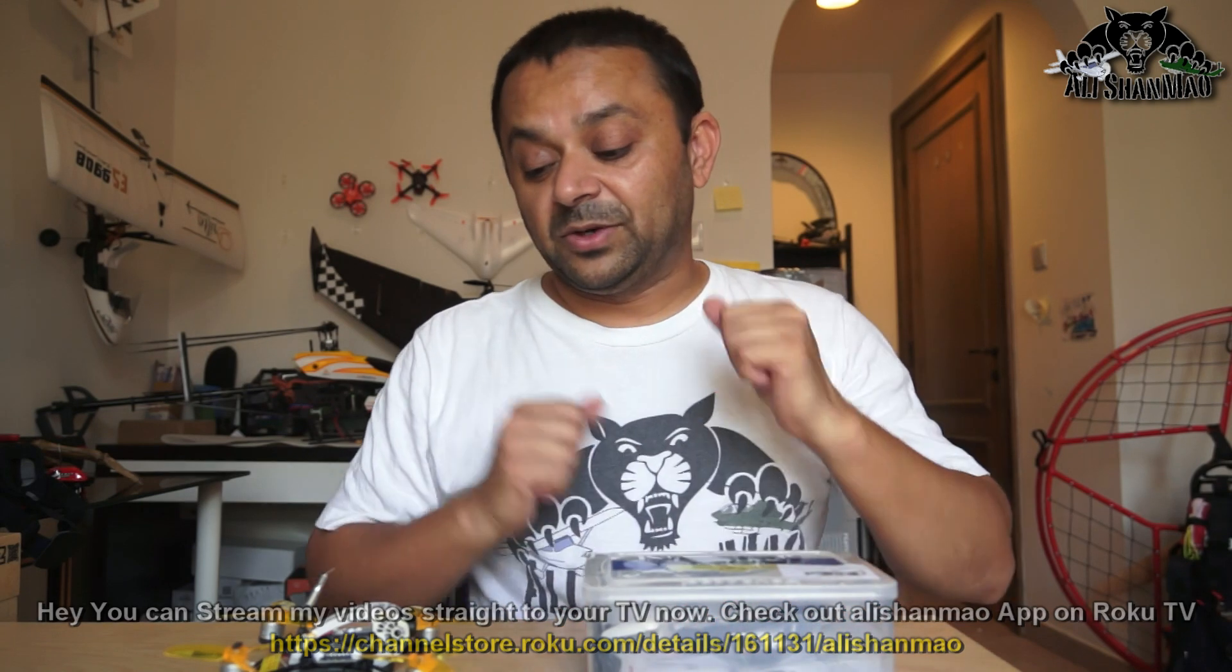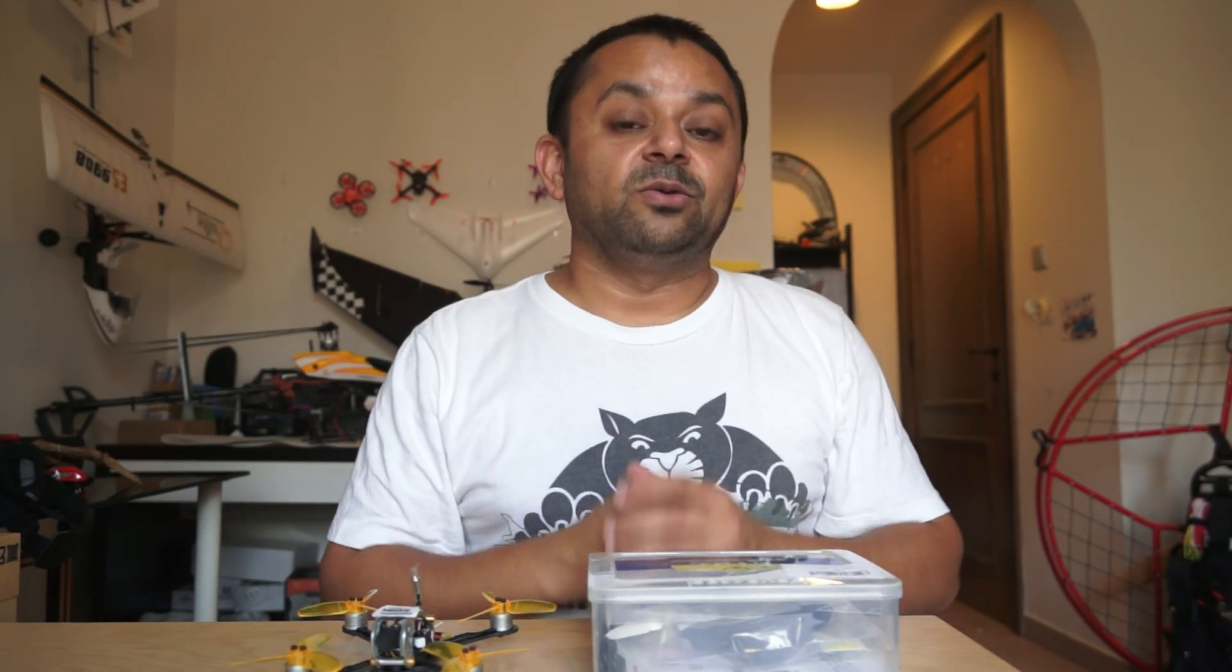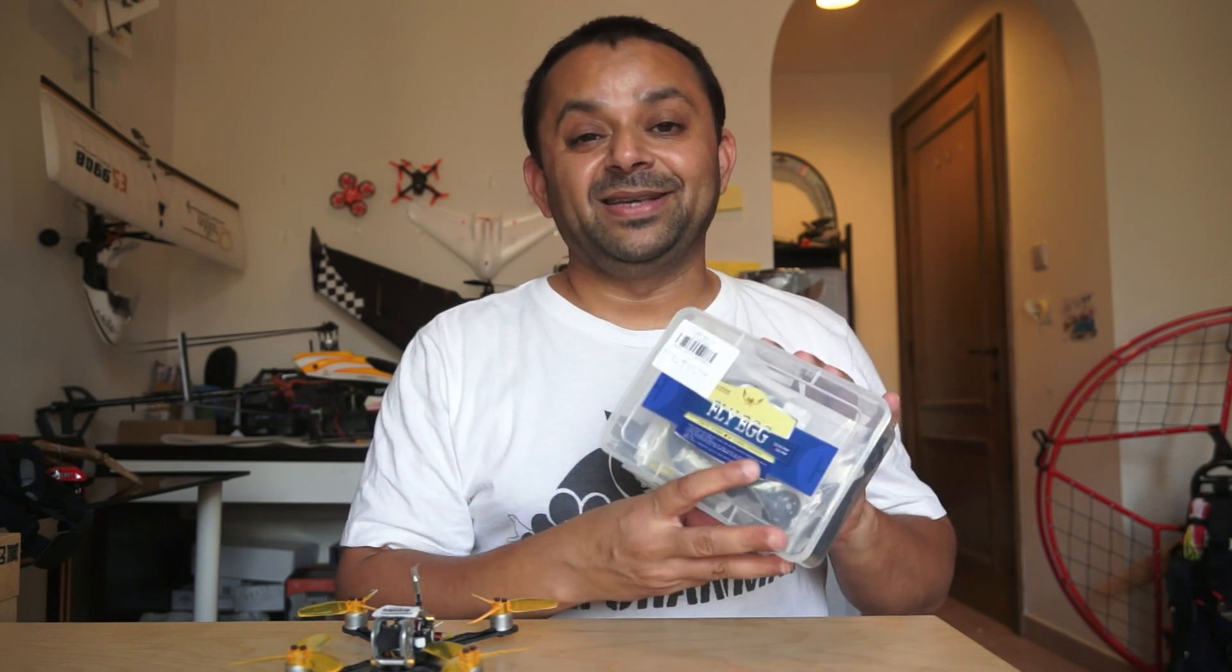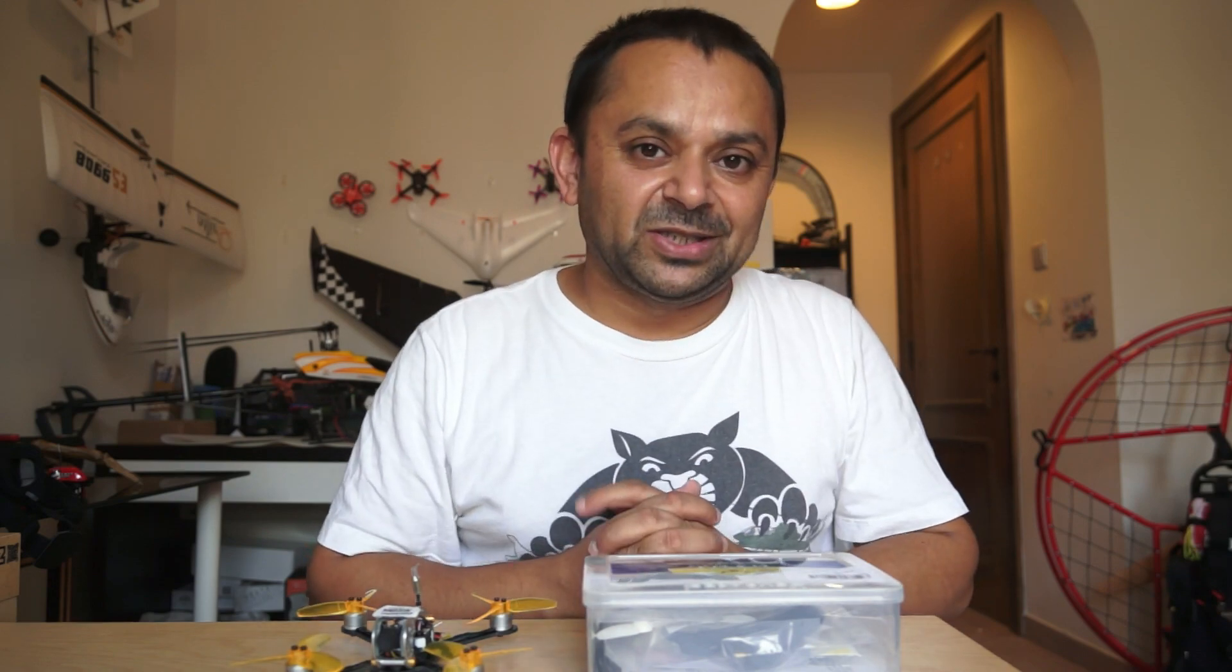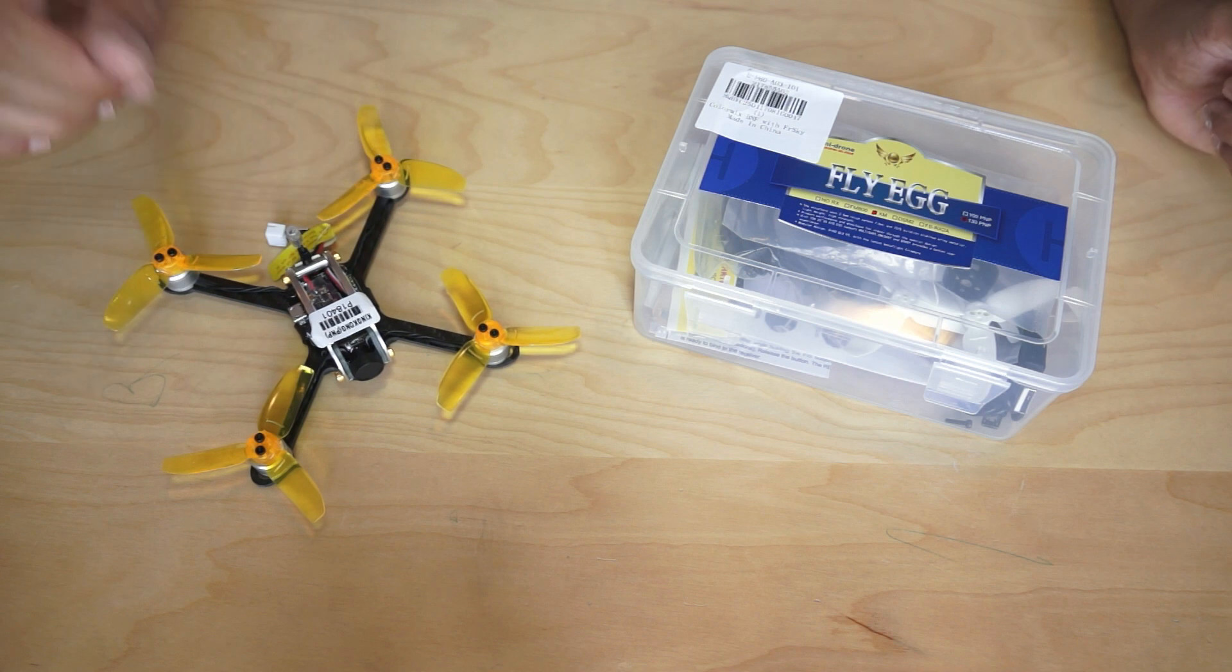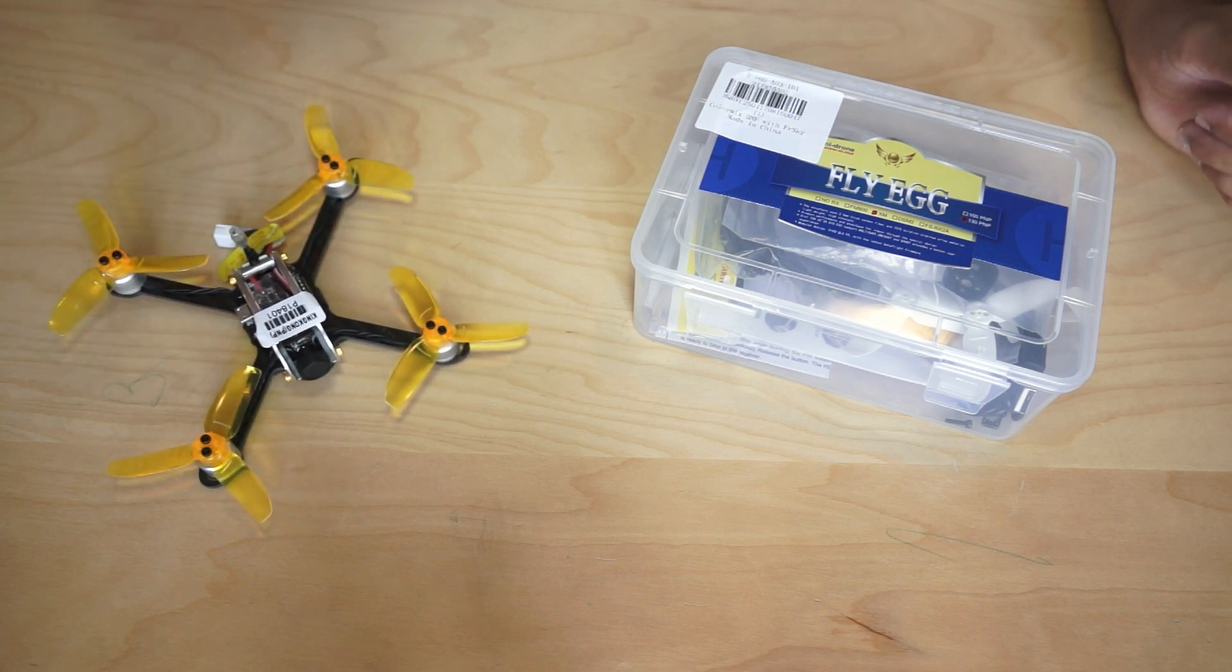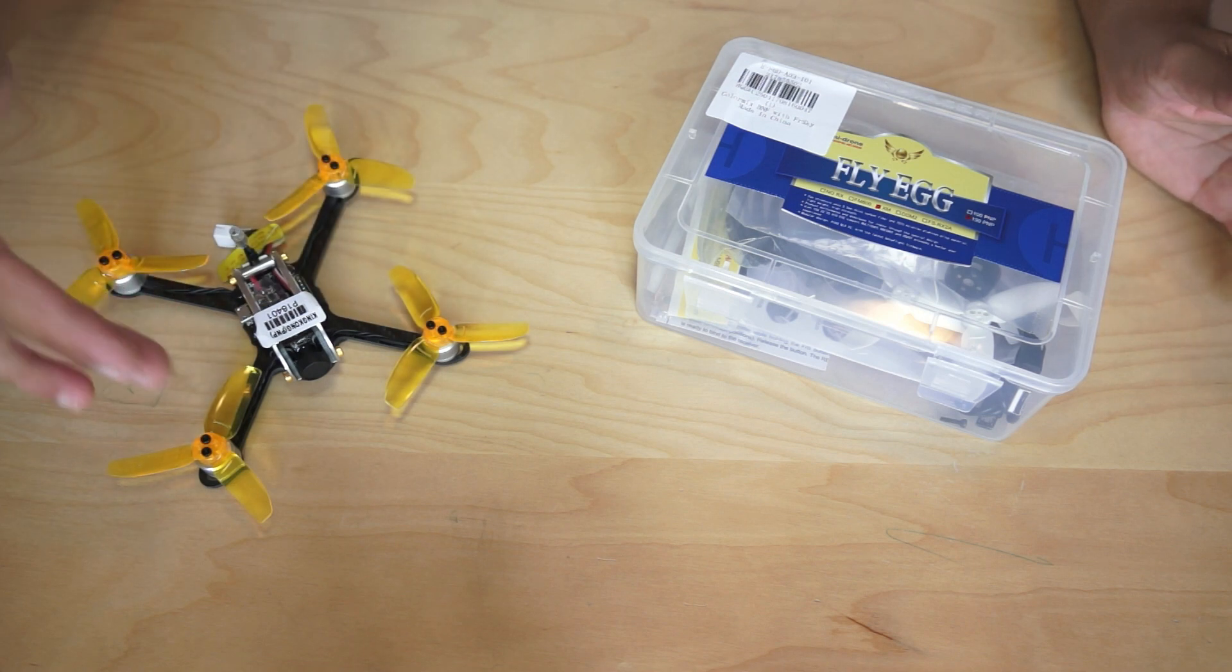So for now this quadcopter came in this box. Let me give you a closer look at the quadcopter and what comes inside the box, inside this amazing nice box, the accessories and everything. We'll take a look at the features. So this is the King Kong Fly Egg right here sitting on the table. Inside the box I had a King Kong Fly Egg and of course these propellers were not installed. There are two sets of propellers.